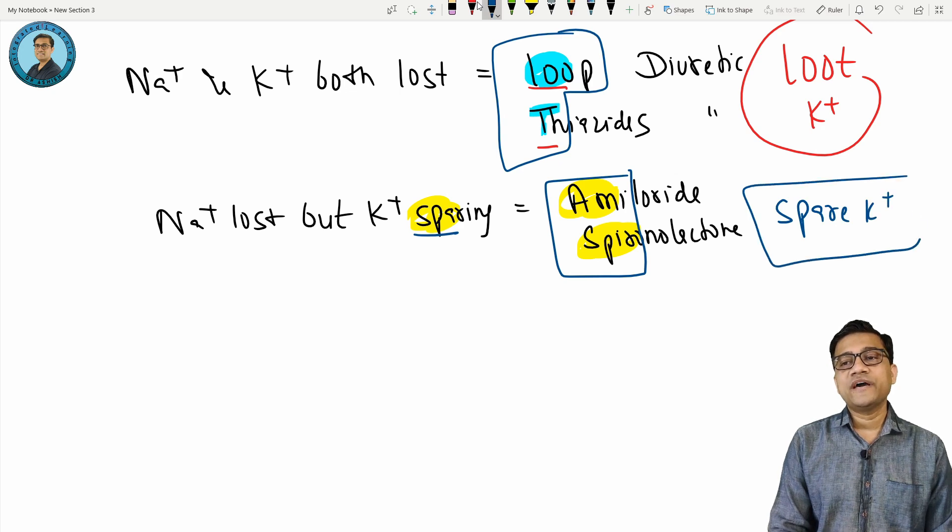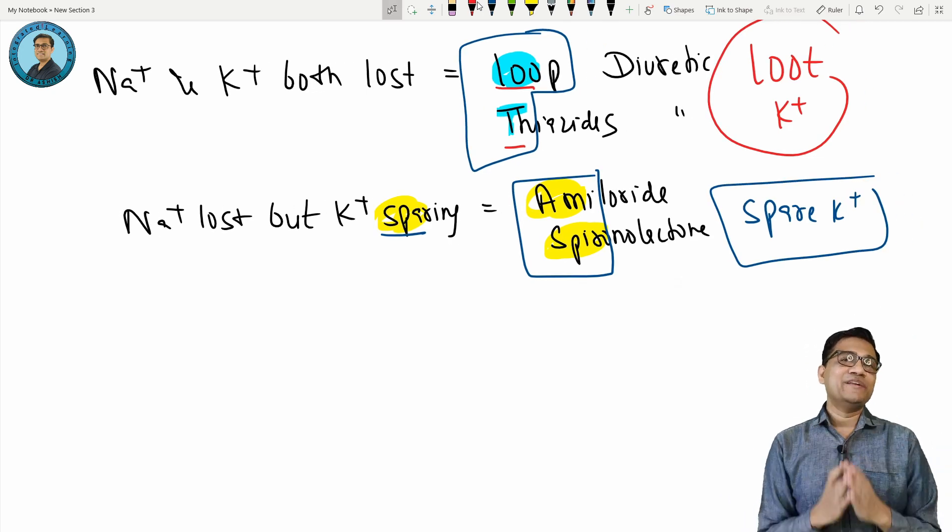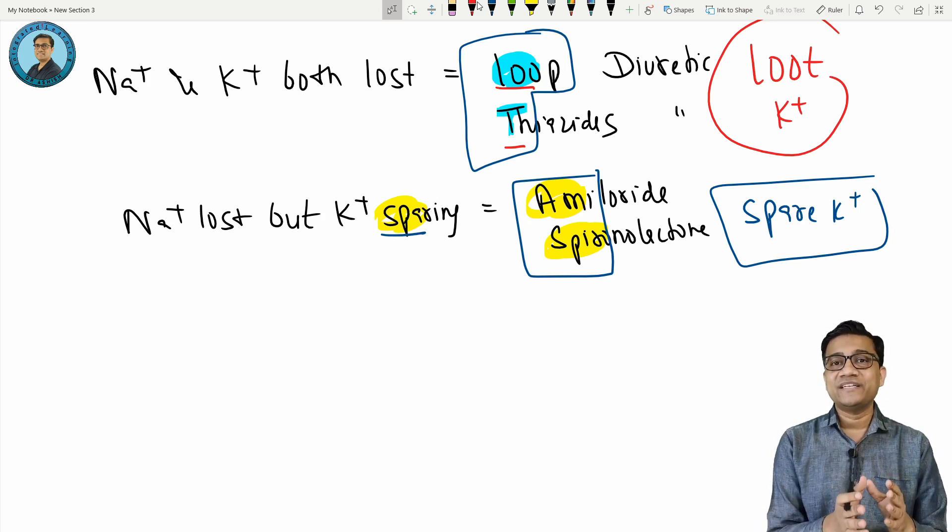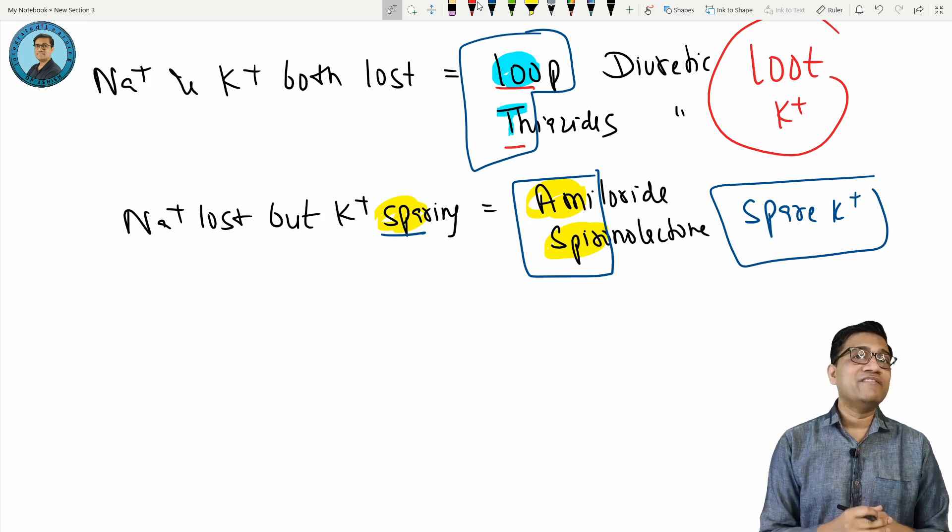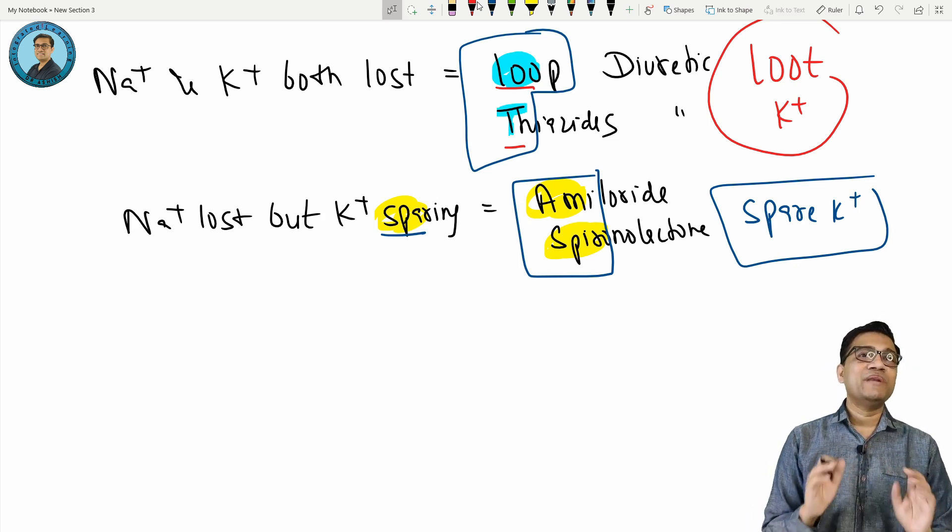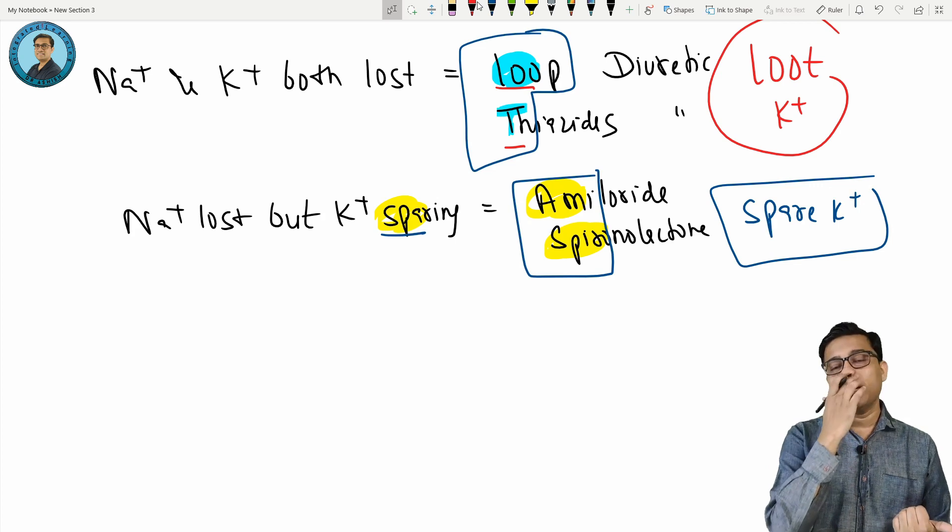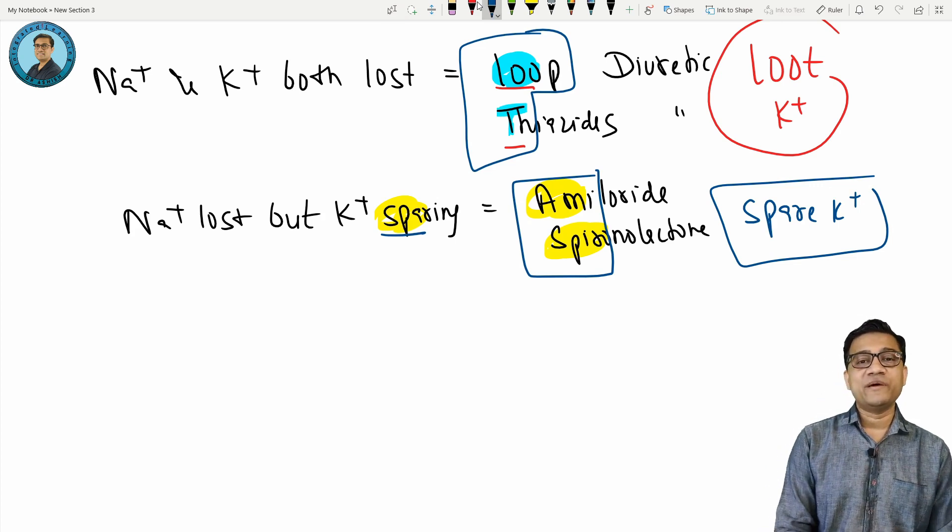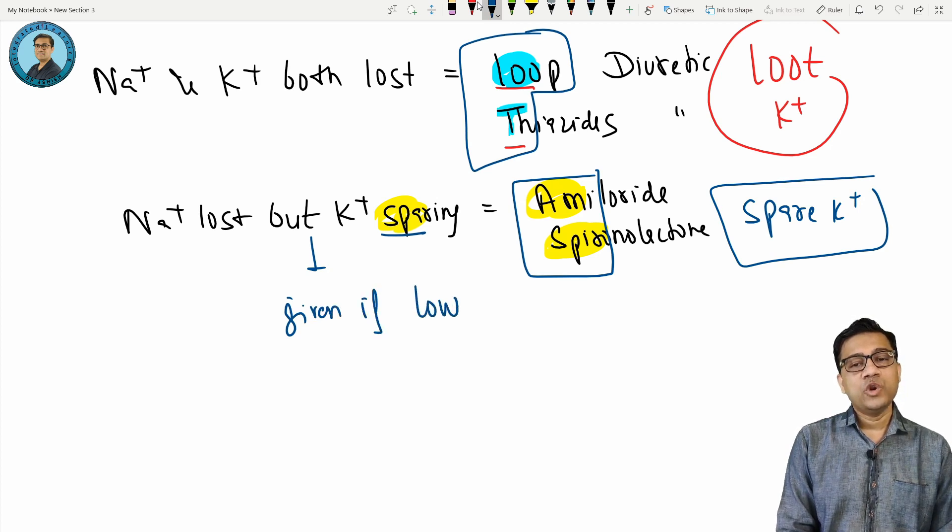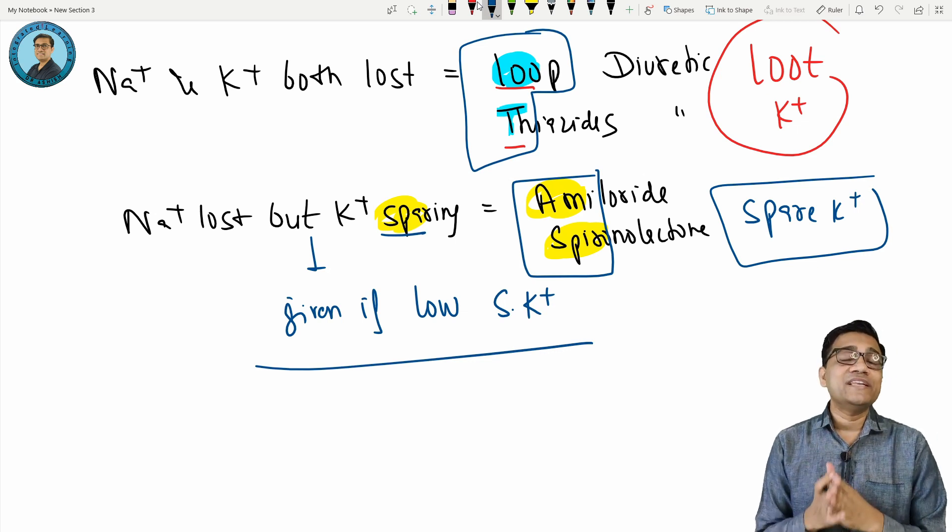That's why if a patient is having hypertension and you want to cause loss of water and sodium, you give thiazides. But if he is having low potassium, you will give potassium sparing. If potassium levels are normal, then we can use thiazide and loop. They are preferred if given with low serum potassium. That is what integration is.